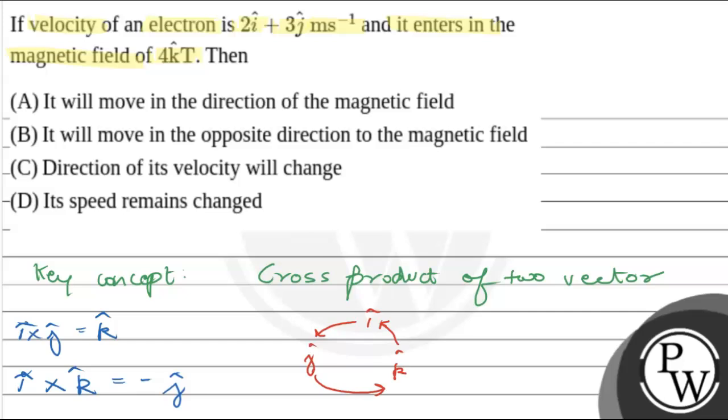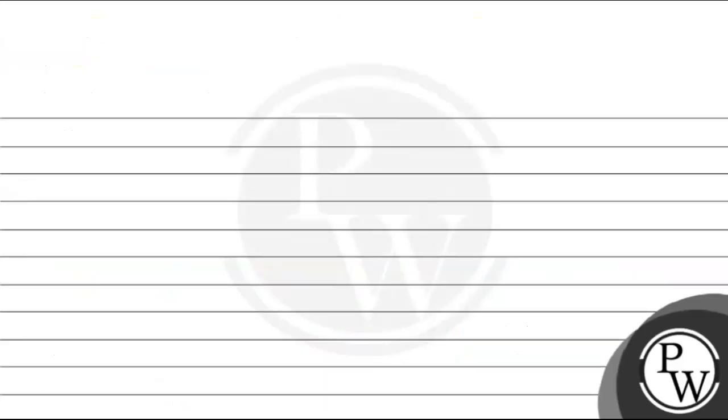And important thing is, when same vector cross product happens, it is zero. That is, i-cap cross product i-cap is zero, and k-cap cross product k-cap is also zero.